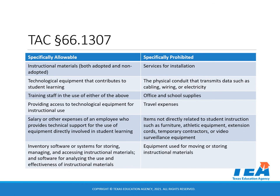Specifically prohibited items and services include: services for installation; the physical conduit that transmits data such as cabling, wiring, and electricity; office and school supplies; travel expenses; items not directly related to student instruction such as furniture, athletic equipment, extension cords, temporary contractors, or video surveillance equipment; and equipment used for moving or storing instructional materials.